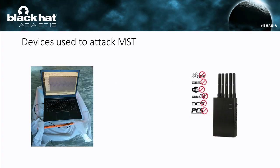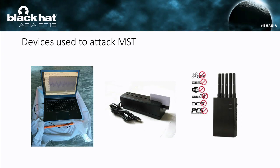These pictures show the devices we used to launch the attack. The leftmost one is a computer with a coil antenna connected via a 3.5mm audio jack. The right picture shows a commercial jammer purchased at Huaqiangbei in Shenzhen, which can selectively jam wireless channels such as GSM, Wi-Fi, CDMA, DCS, and PCS. The middle one is a commercial magnetic strip card writer that can write any data into a blank magnetic strip card. The cost of the attack is very cheap — around 20 to 30 US dollars.